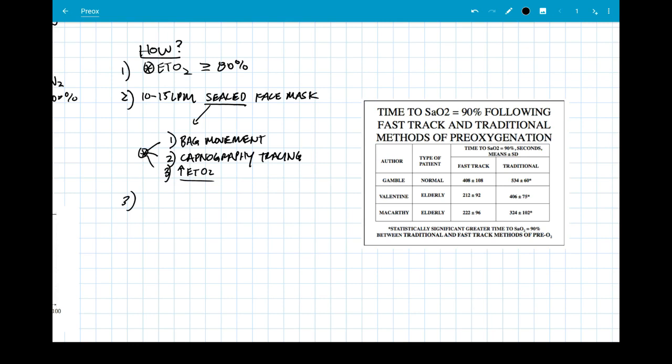And number three there are two methods to perform this. One and the most common one is that the patient takes tidal volume breaths for three minutes. Or number two, you can have them do the fast track method which is six vital capacity breaths in 30 seconds. So all the way in, all the way out, six of those breaths in 30 seconds.